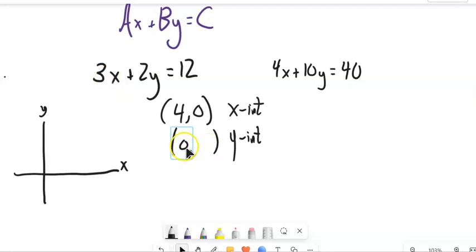Similarly, if I let x be 0, 3 times 0 is 0. That's just the 0. 2 times y equals 12, so y must be 6. And so then notice now I know these two points that it goes through.